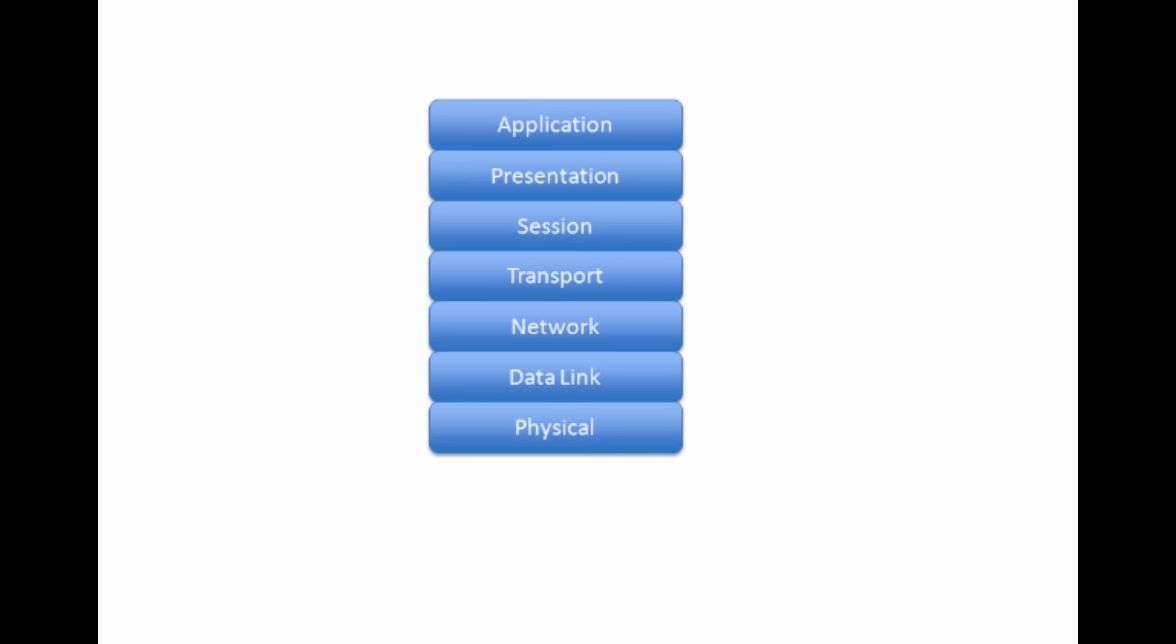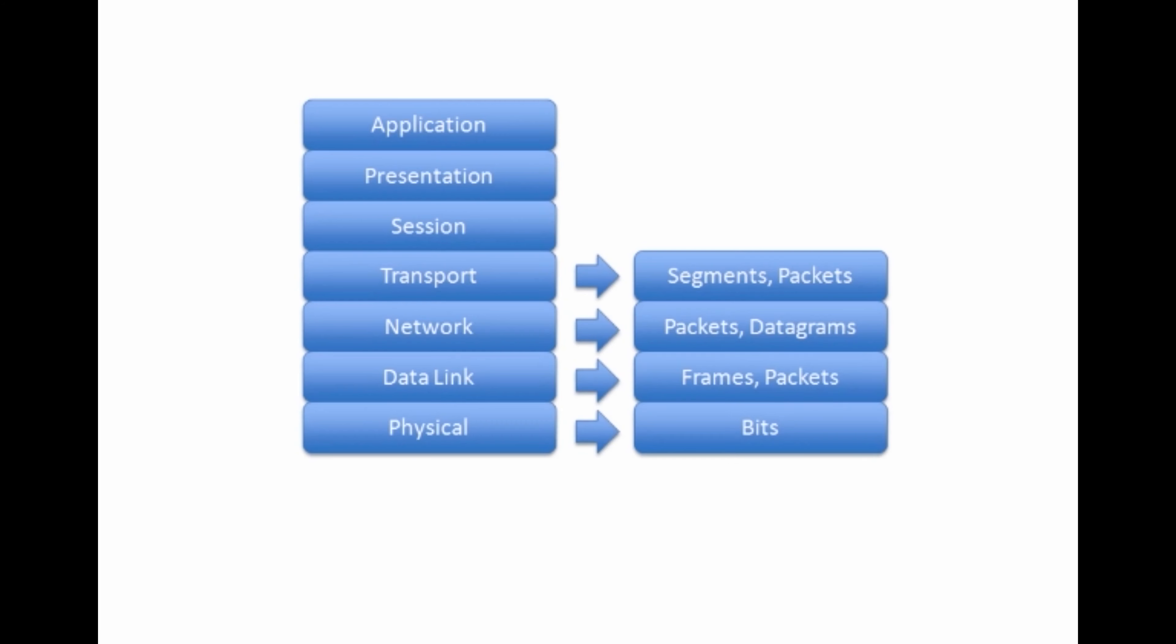In this video we're going to take a look at layer one, the physical layer. Before we do that though, there's a bit of terminology we need to get straight. When we talk about data at different layers of the OSI model, that data has different names. These different names are different protocol data units, different PDUs.